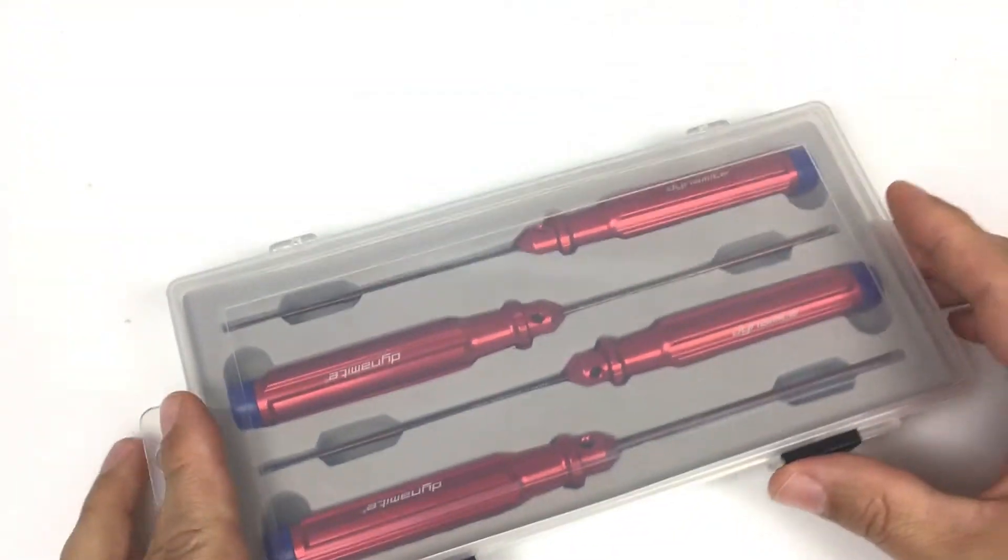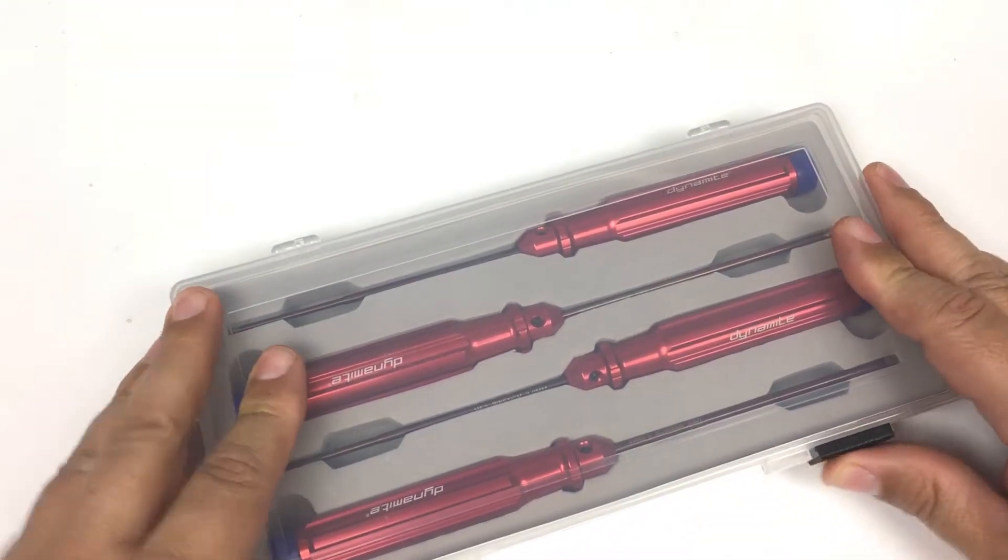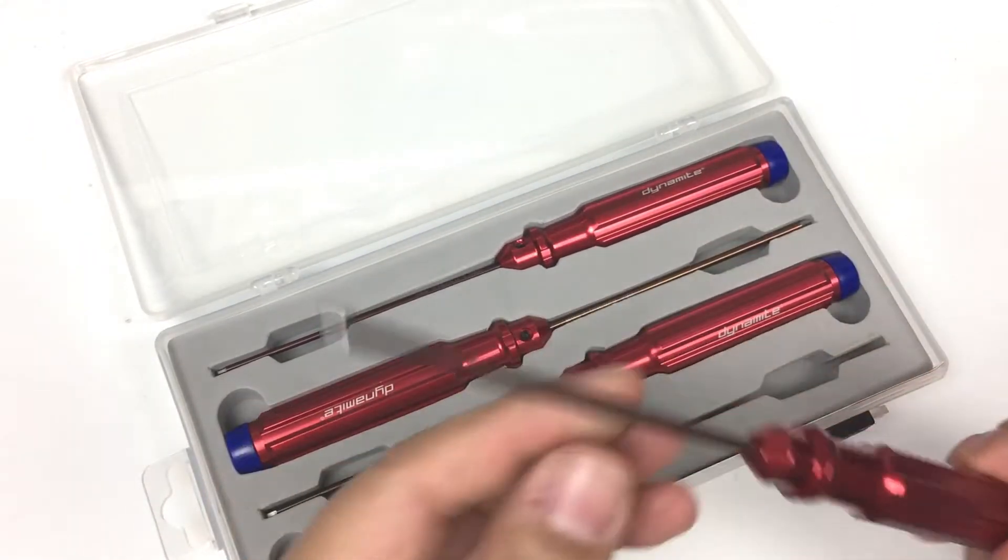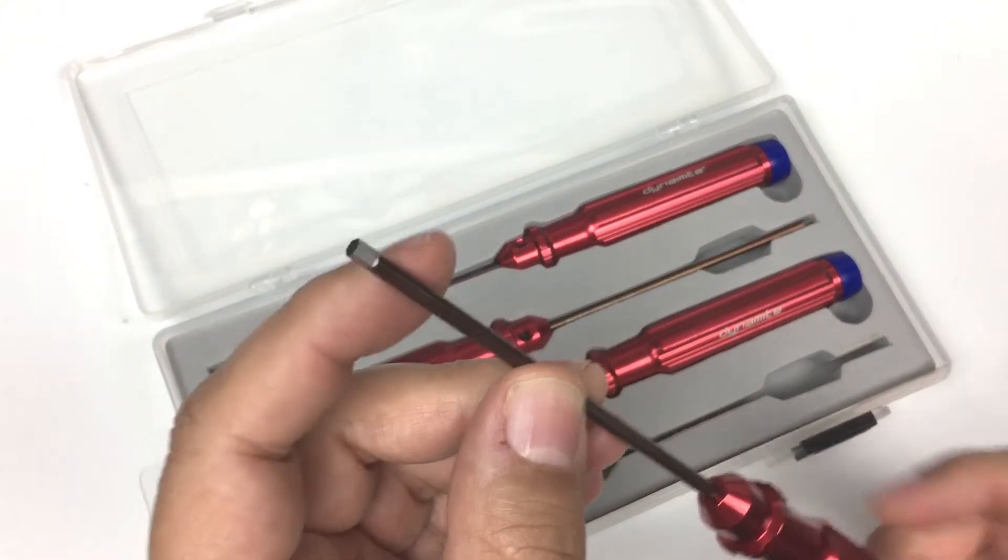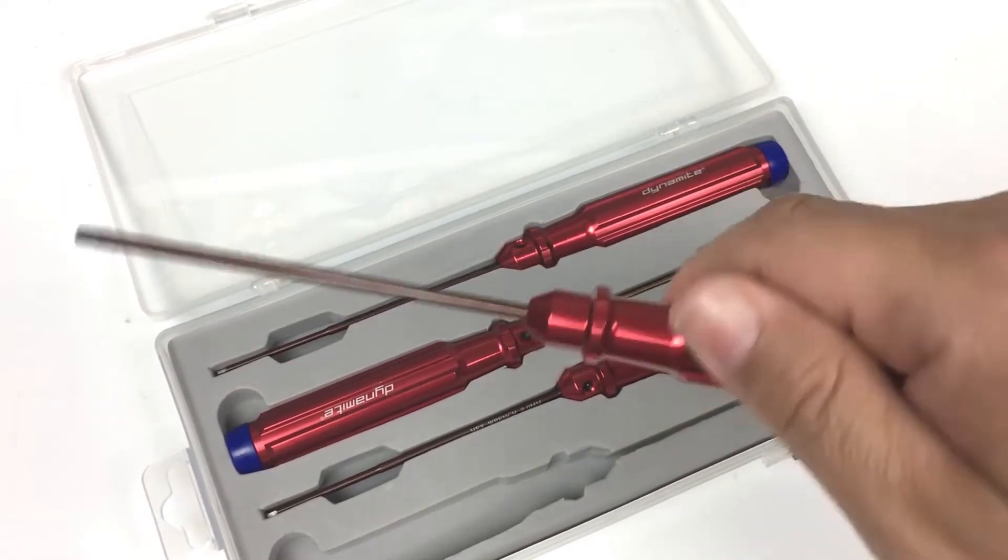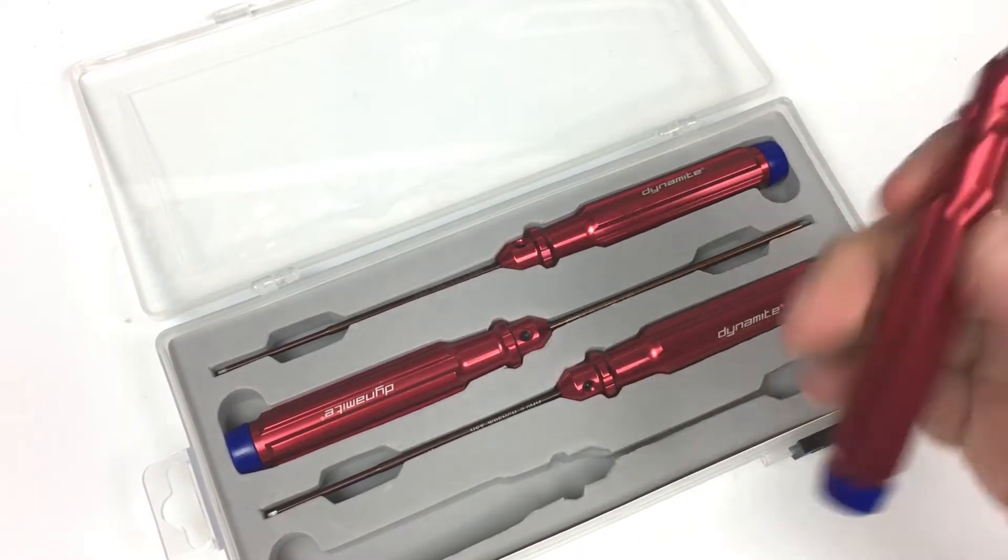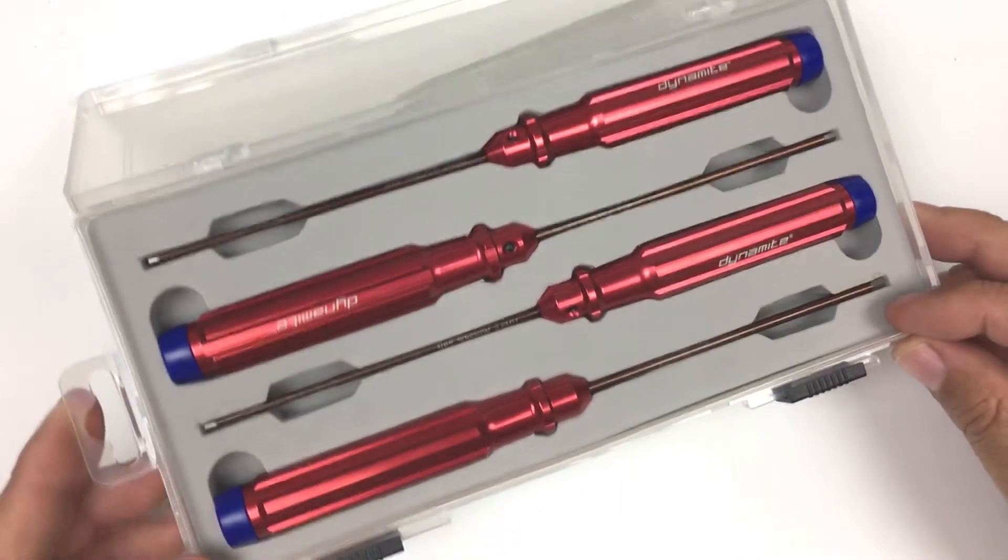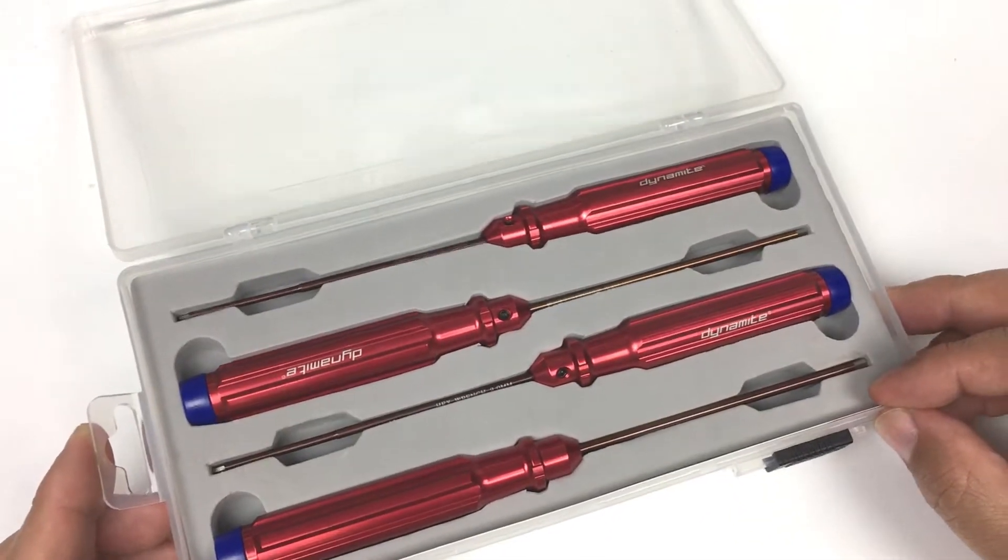And number one on your list should definitely be a nice set of hex drivers. These happen to be from Dynamite. There are lots of brands that make them. And with a hex driver, you're going to get a longer lasting hardened steel tip, a screwdriver type handle that makes things much easier for wrenching on your vehicles. Much more convenient, much more comfortable. Definitely put these number one on your tool shopping list.